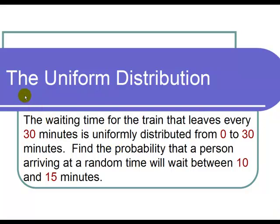This is a video on the uniform distribution. The question states, the waiting time for the train that leaves every 30 minutes is uniformly distributed from 0 to 30 minutes.